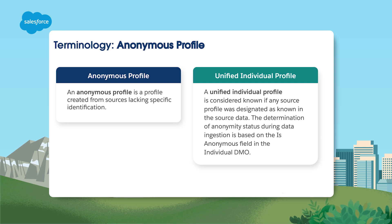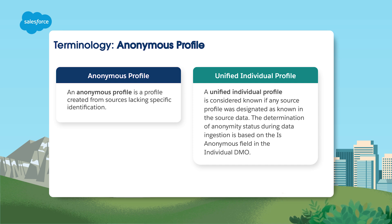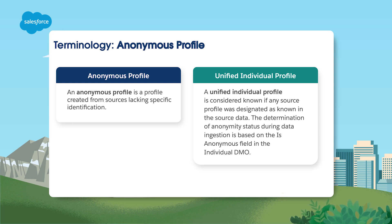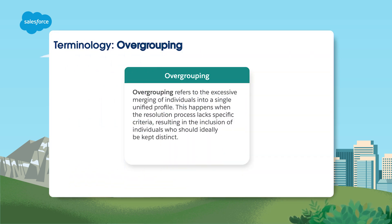If a source profile is marked as known, the unified profile is known. Anonymous unified profiles are only made from other anonymous profiles, which are created from unidentified sources. The isAnonymous field on an individual data model object, or DMO, determines the anonymity status during data ingestion. Overgrouping happens when individuals are merged without clear criteria, often leading to including individuals who should really be kept separate.